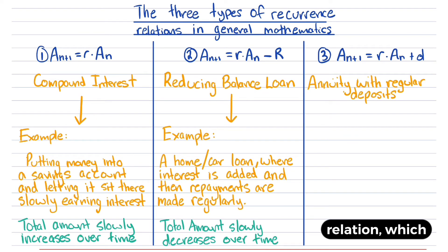The third recurrence relation, which from my experience doesn't come up too often, is the annuity formula with regular deposits. This formula is relatively similar to reducing balance loans, except instead of subtracting an amount we're adding an amount—making deposits instead of repayments.